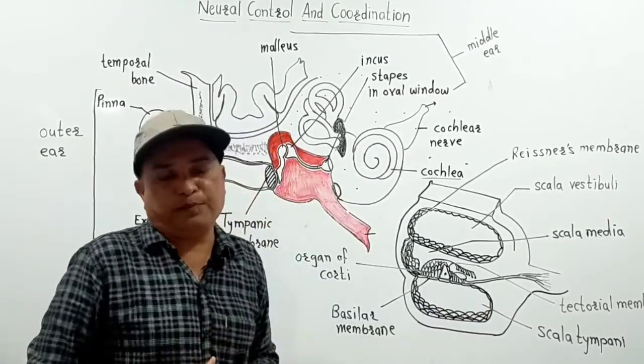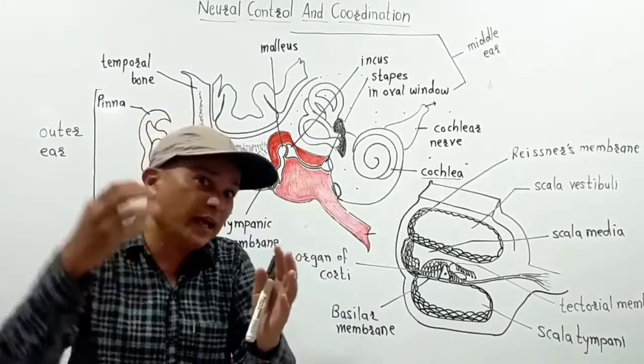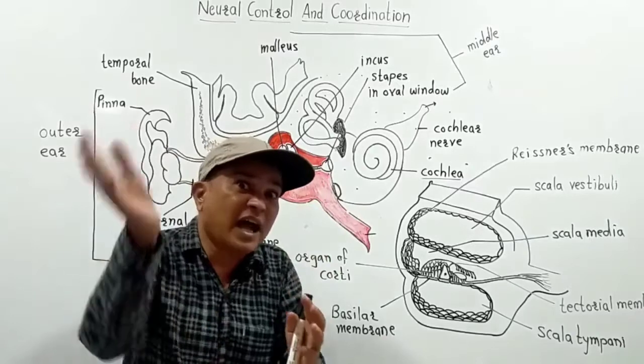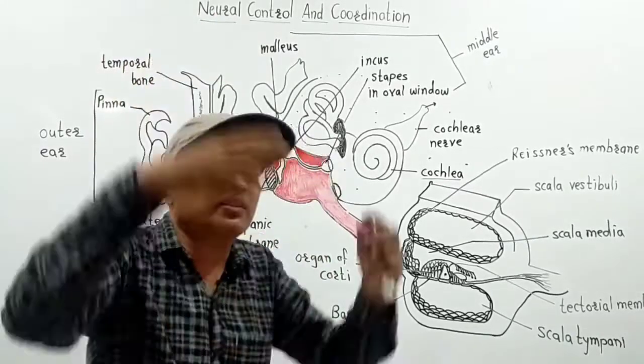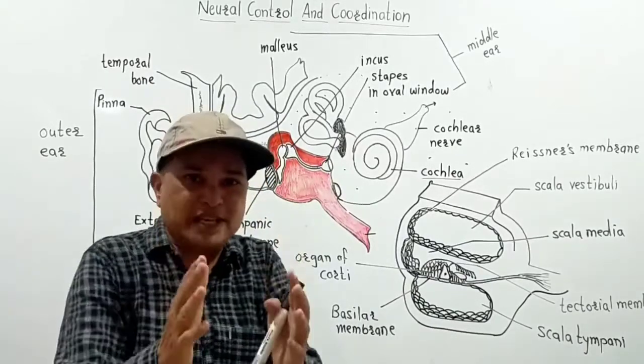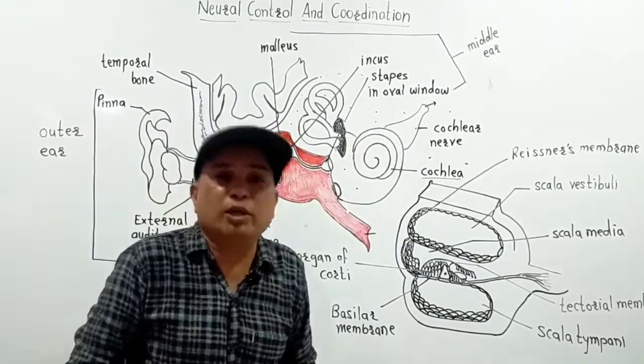And the sound is perceived. So what we have heard, the ears do the work of hearing. But what we have heard, that is understood in different areas of the brain, in the auditory area of the brain. So this is the mechanism of hearing.